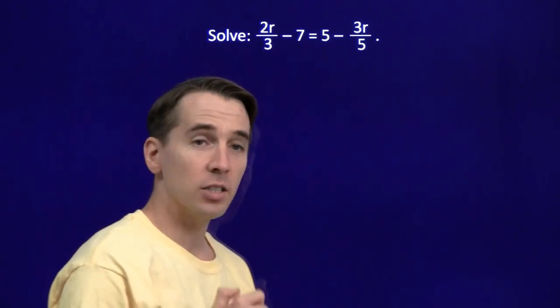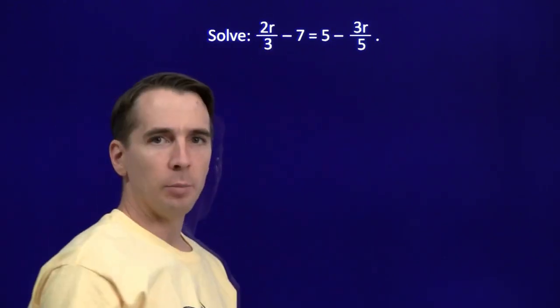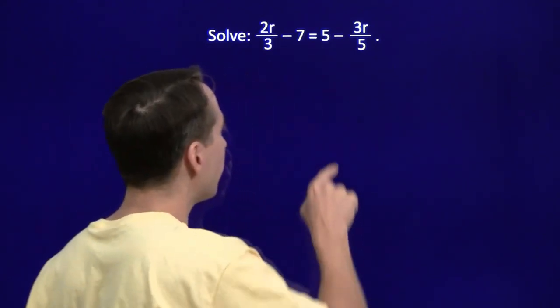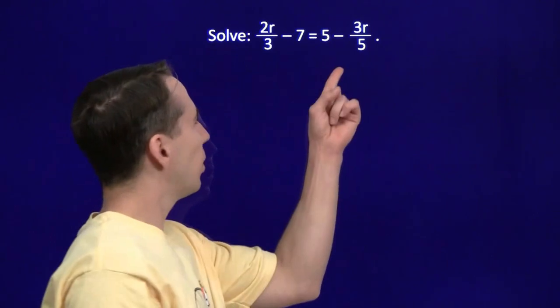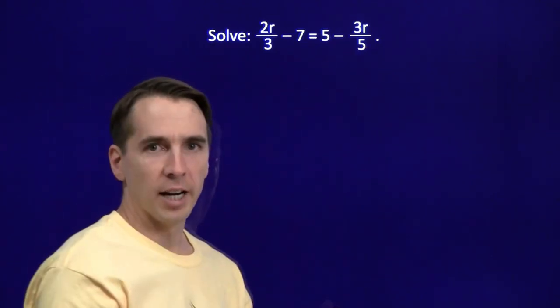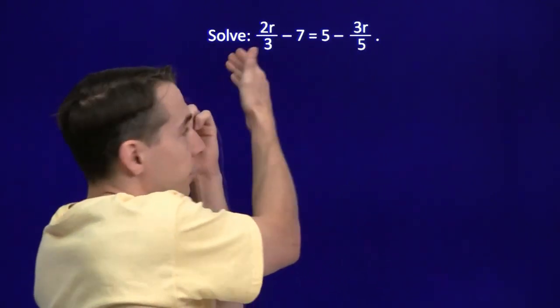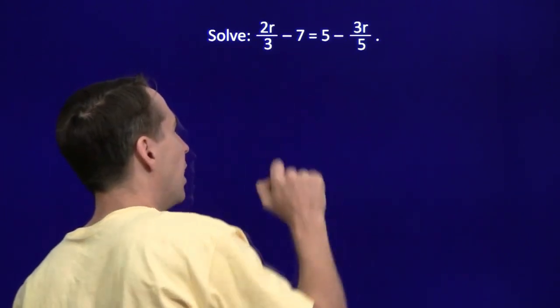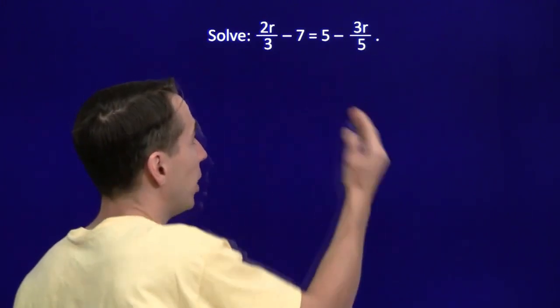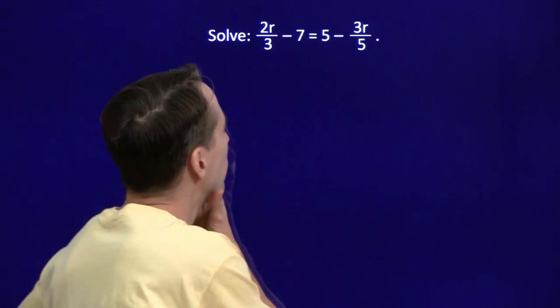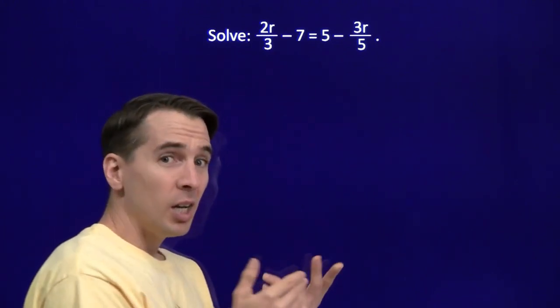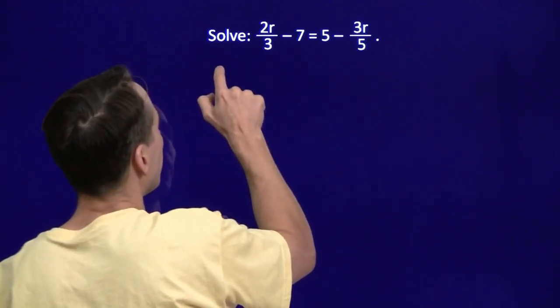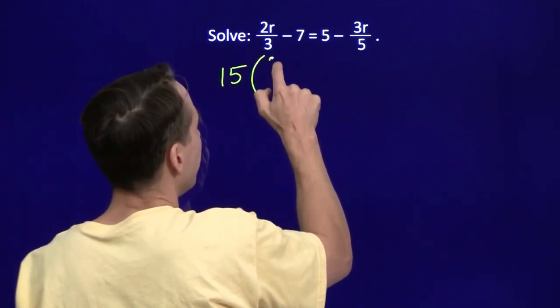Now, how can we get rid of these fractions? Well, if we multiply the left side by 3, that will wipe out the 3 in the denominator here. We have to multiply the 7 by 3 as well. But multiplying the right side by 3 won't help us with this fraction. We have to wipe out the 5 by multiplying the right side by 5. Of course, if you multiply the right side by 5, you have to multiply the left side by 5 too. So we want to multiply by 3, and we want to multiply by 5. That means we multiply by 15. So we're going to multiply both sides by 15.